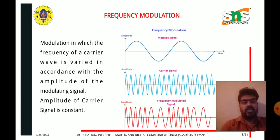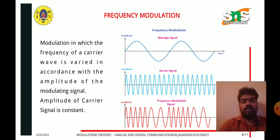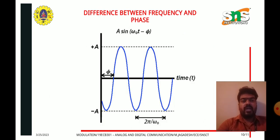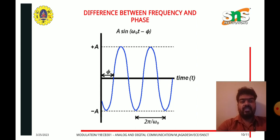In phase modulation, the phase of the carrier signal is varied in accordance with the amplitude of the message signal. The difference between frequency and phase can be understood from this diagram: phase is denoted as π, and frequency is related as 2π/ω₀, which helps us understand the difference between phase and frequency.